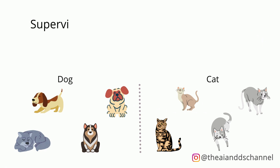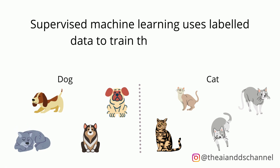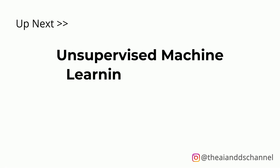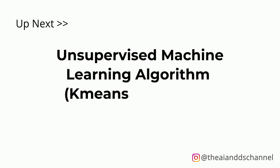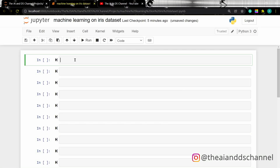Supervised machine learning methods are used to train the model when we have labeled data. If you want to know more about machine learning you can check out my video on this topic, or if you want to know how to perform unsupervised machine learning algorithms such as k-means clustering on the iris dataset, you can check out my next video on this topic. I'll add a link to these videos in the description.